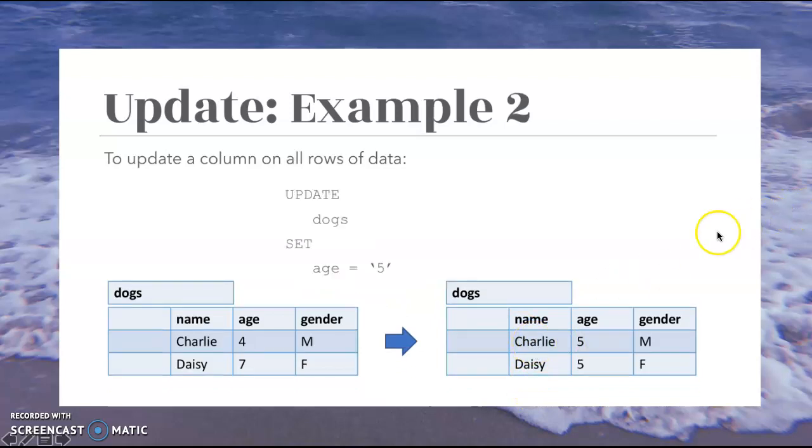And on our second example, we removed the where clause. So this will just update the table dogs to make the age five on all instances of this column. So that is going to be obviously less specific. And the where clause will help us be more specified with what's going to be changed. But sometimes this would be useful as well.